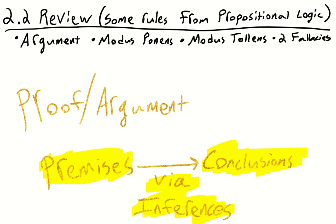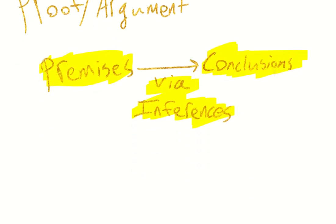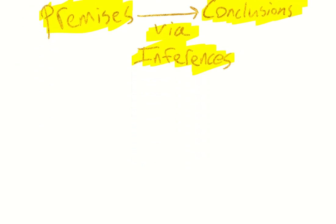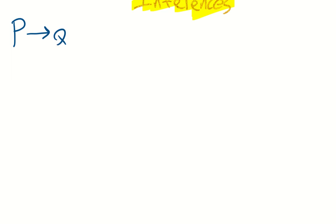Section 2.2 starts with what scholastic logic calls the mixed hypothetical syllogism. There are only two valid forms: modus ponens and modus tollens. The other two are invalid. This is a good place to start. It has the same major premise: if p, then q — a molecular sentence.